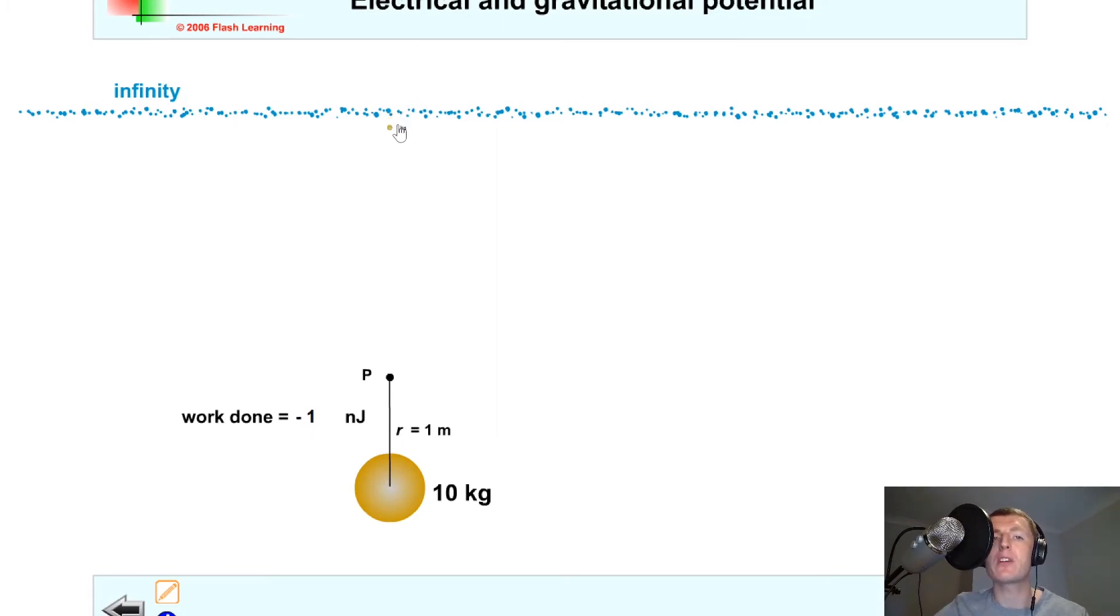Now if we were to bring our one kilogram mass closer and closer to our 10 kilogram mass, you'll notice that the work done value down here is actually increasing but negatively. So we're getting a bigger negative value. And remember that is because we've said that the gravitational field lines will be acting in towards the center of the mass. And because we've defined zero joules to be at infinity.